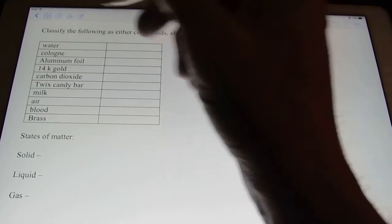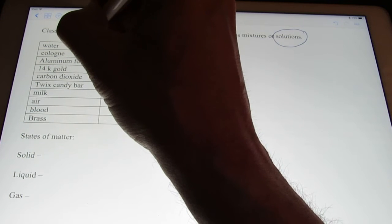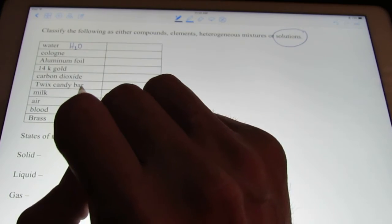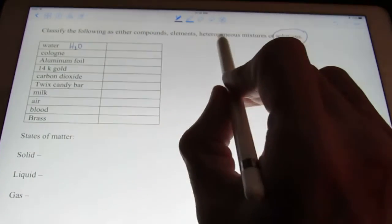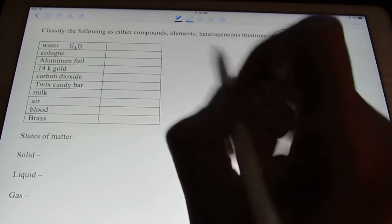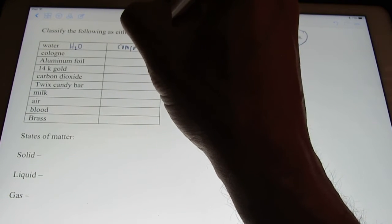So, let's talk about water first. Isn't water chemically H2O? Isn't that two or more different elements chemically bonded to each other? So, is that a compound, an element, a heterogeneous mixture, or a solution? If you said compound, good for you. You scored a point today.